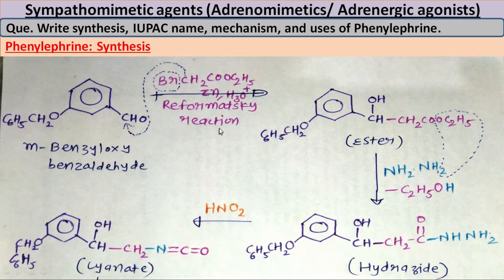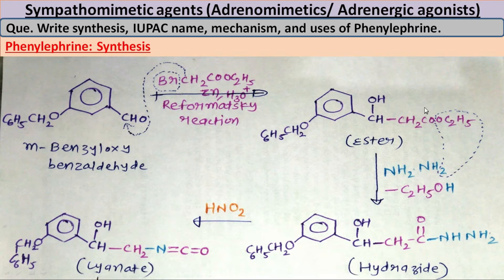In the Reformatsky reaction, an aldehyde or ketone reacts in the presence of zinc to give an alcohol. Now this compound will be treated with hydrazine. From the hydrazine, hydrogen will be liberated, and from the ester, ethoxy will be liberated as ethanol. The entire molecule will then be converted into a hydrazide: CO then NH-NH2. This is known as a hydrazide; the remaining molecule stays the same.